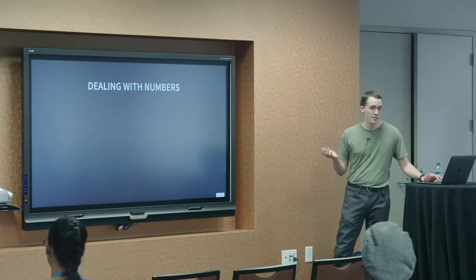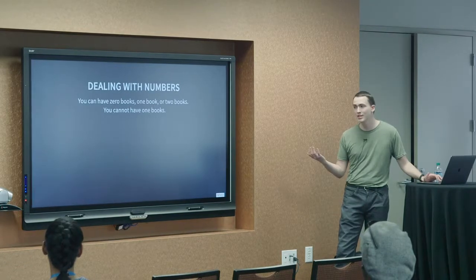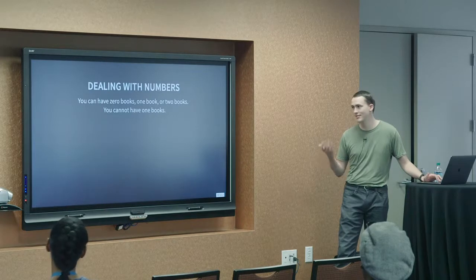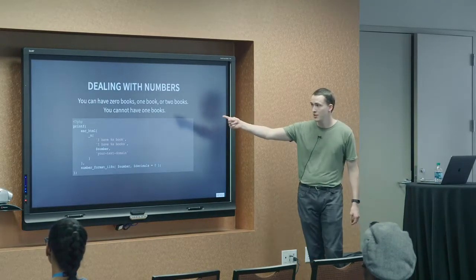So, then we get into numbers. So, you can have zero books, one book, or two books. In English, at least, you cannot have one books. That doesn't make sense. Sounds wrong. So, you're able to, once again, use printf, but you're also able to use the underscore n function,